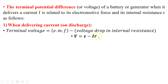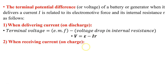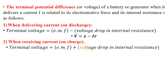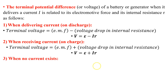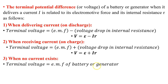The internal resistance is basically the source of the electric current — you can think of this as a battery or generator. When receiving current, we add up the electromotive force with the voltage, and the equation is: V = EMF + voltage drop across internal resistance.